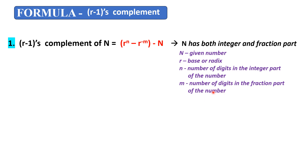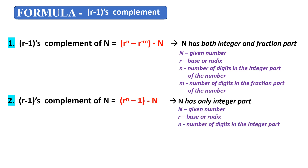If the number has both the integer and fraction part, we use that main formula. The next formula is used if the number has only the integer part — there is no fraction part. This formula is derived from the first formula. Since there is no fraction part, the number of digits in the fraction part becomes 0, so r to the power of minus 0 equals 1. This simplifies the formula to r to the power of n minus 1 minus N.